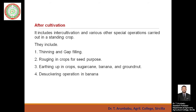After cultivation includes intercultivation and various special operations carried out on a standing crop. The first is thinning and gap filling — thinning means removal of excess plants, while gap filling means wherever seeds have not germinated, gaps are filled by transplanting seedlings or sowing seeds. Next is roguing in crops grown for seed purpose — roguing means removal of off-types and weeds present in the field that lead to mixtures. Next is earthing up in crops like sugarcane, banana, and groundnuts — heaping soil around the base of the plant to provide mechanical anchorage and reduce lodging.